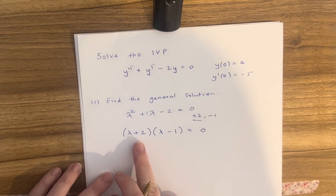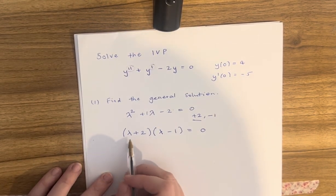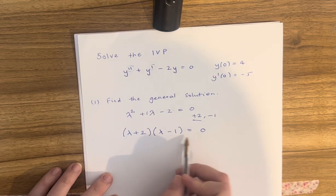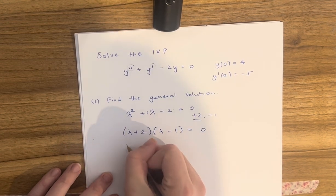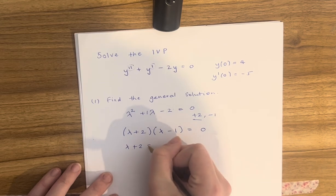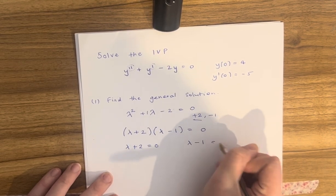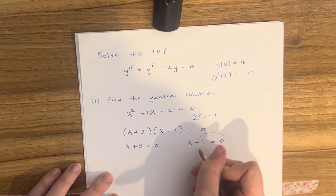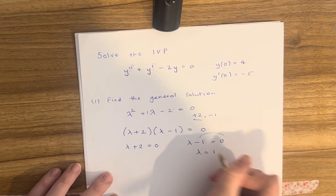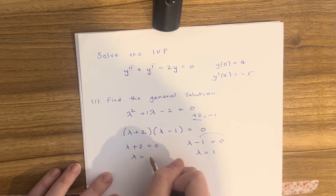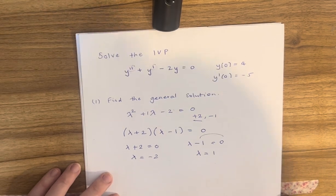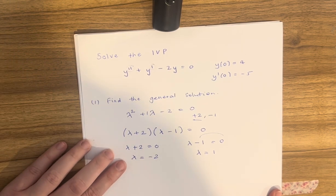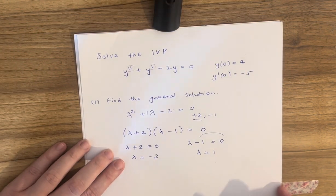To solve for lambda, either lambda plus 2 equals 0 or lambda minus 1 equals 0. Rearranging these gives lambda equals 1 and lambda equals minus 2. So we've got two values for lambda — two solutions to the characteristic equation.